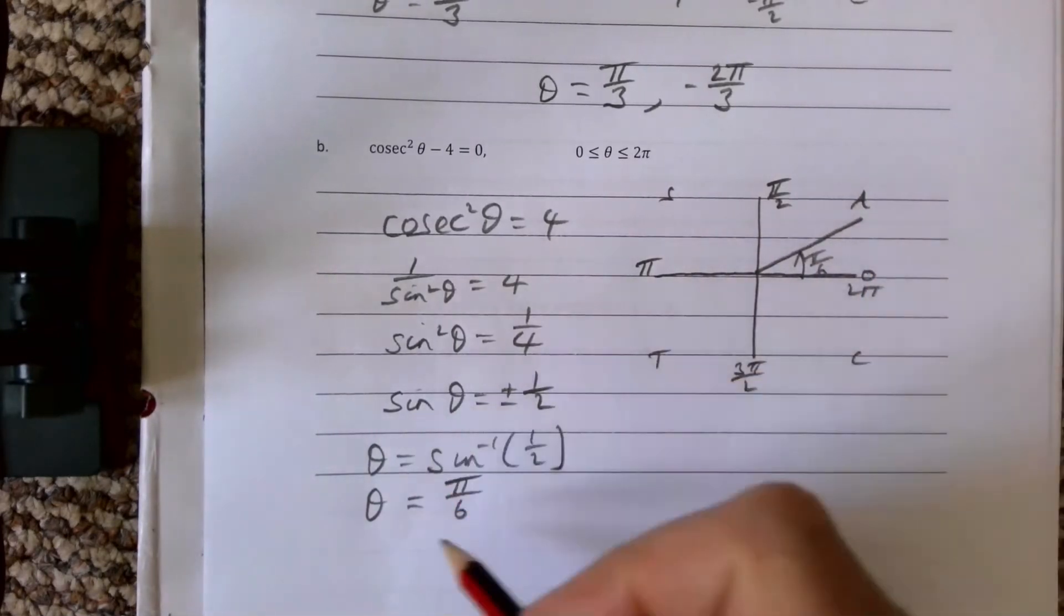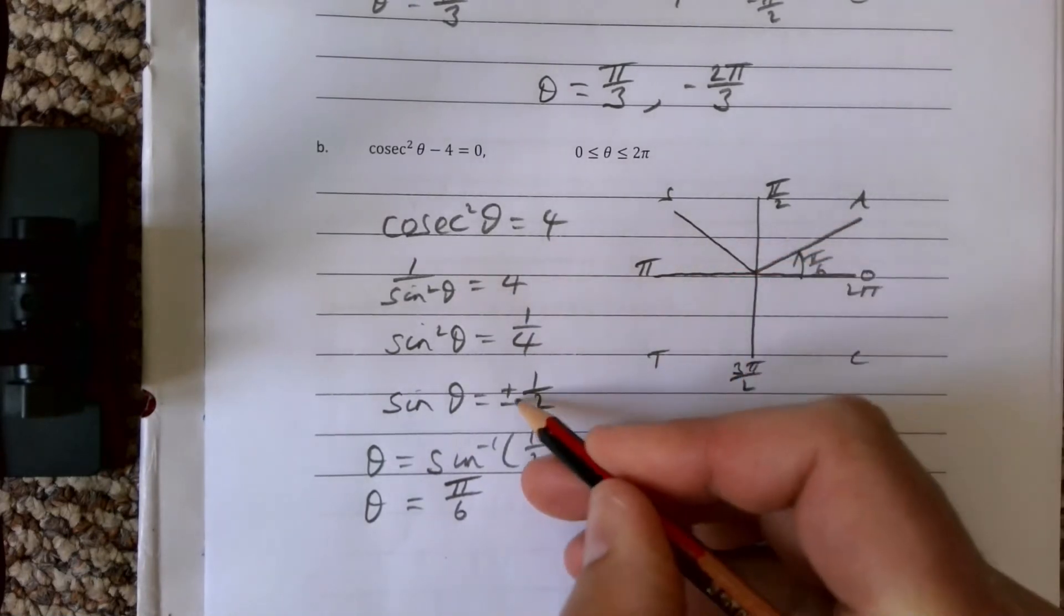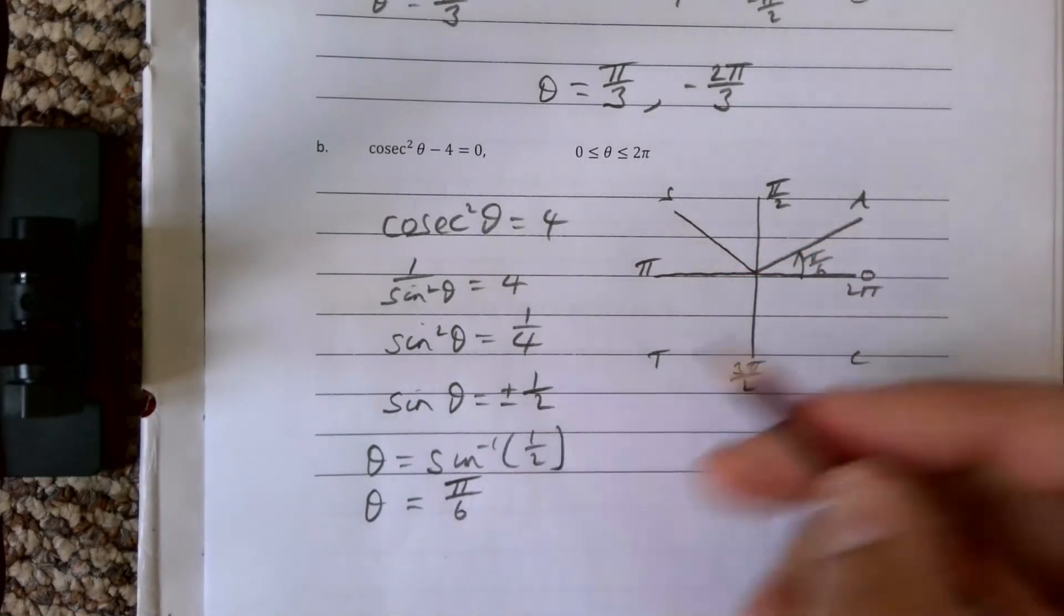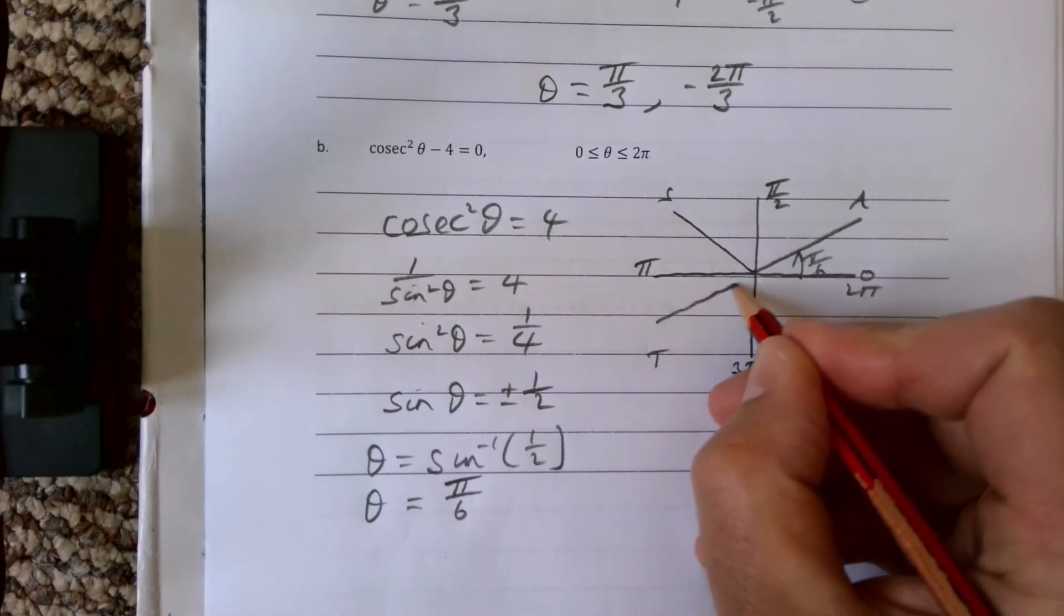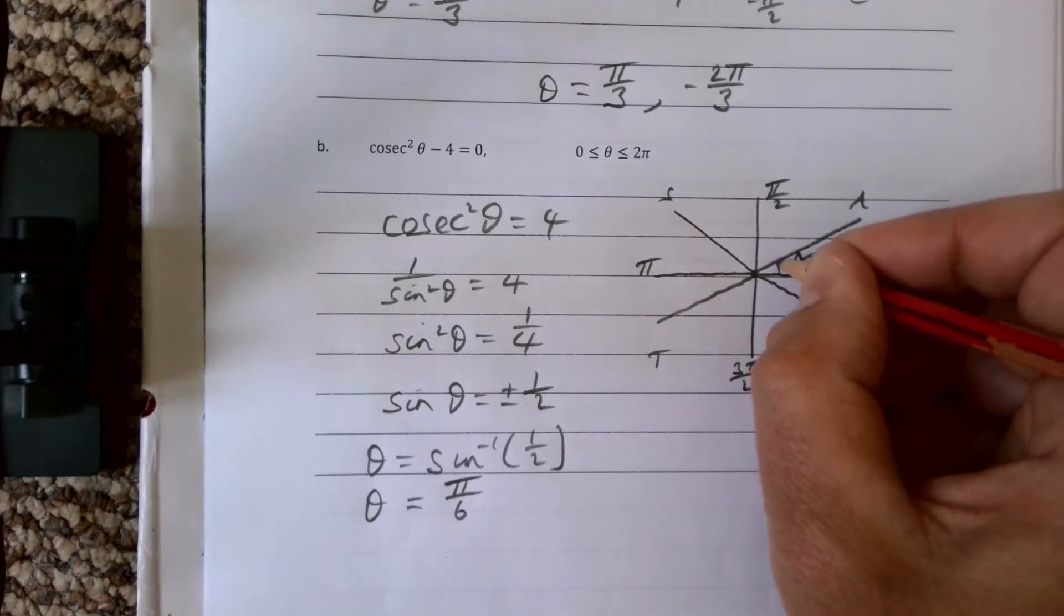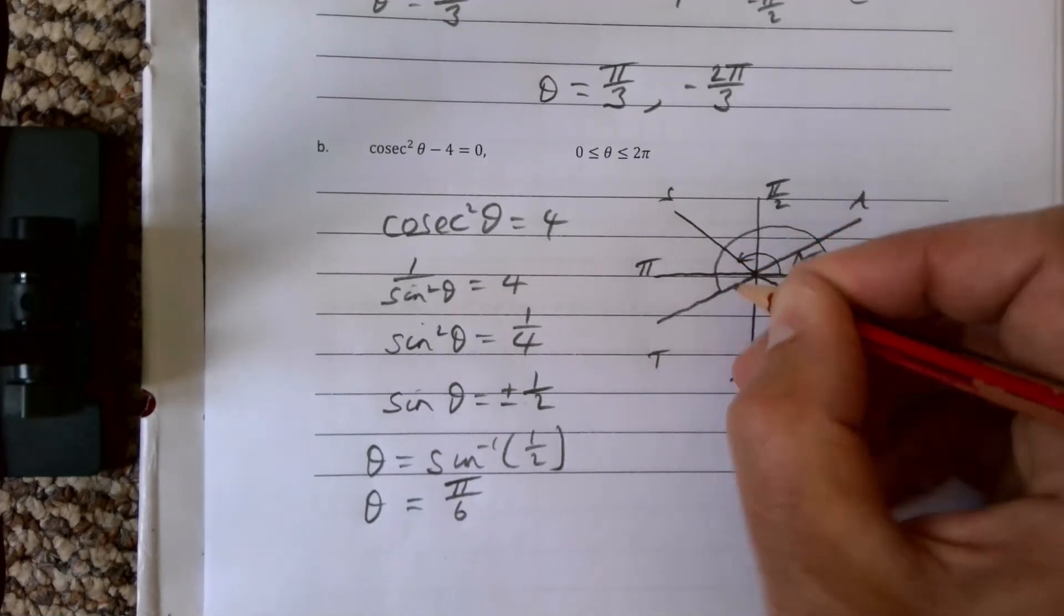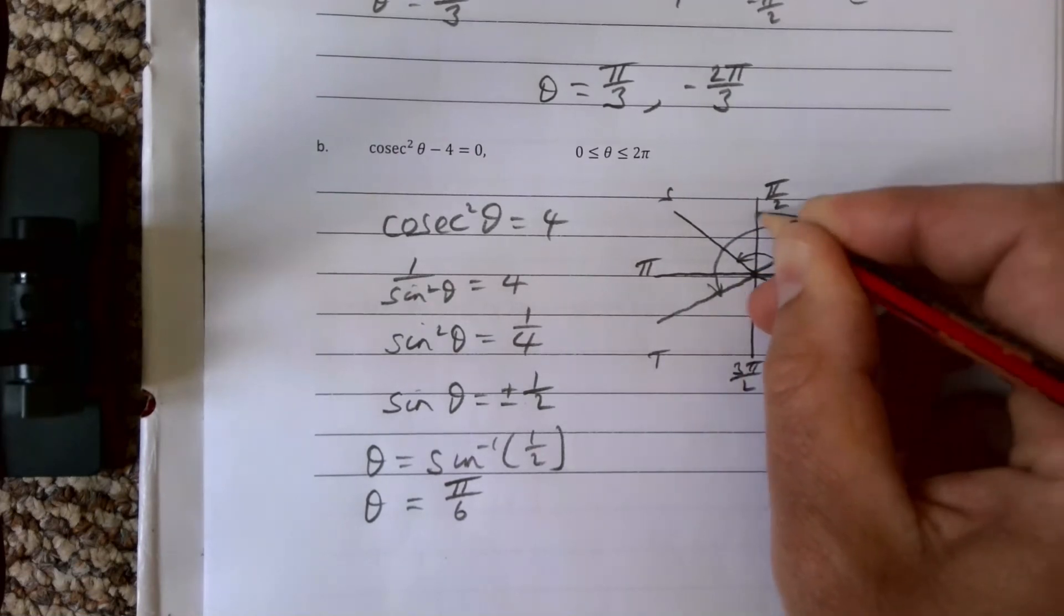Our basic angle is going to be here, and that is π over 6. Where else is sin positive? Sin is positive here, but we want everything—we also want where sin is negative because it's plus and minus a half. So we also want this one here and we want this one here.